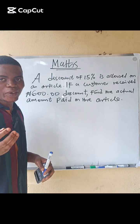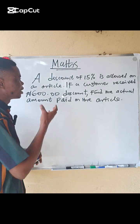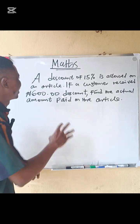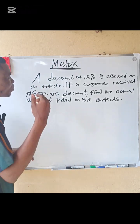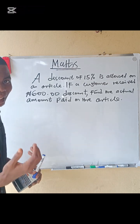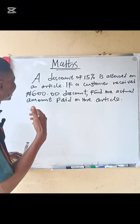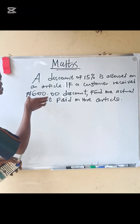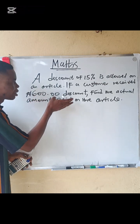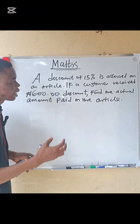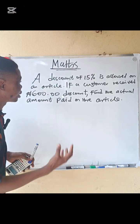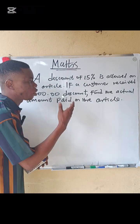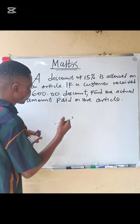Good. Here's another interesting question — not very simple. A discount of 15 percent is allowed on an article. If a customer receives a 600 naira discount, find the actual amount paid on the article.